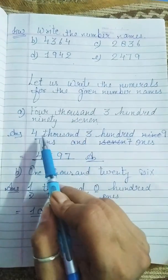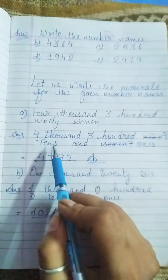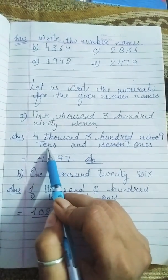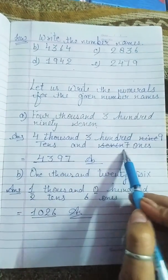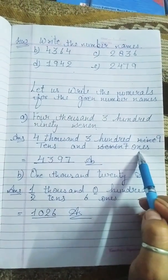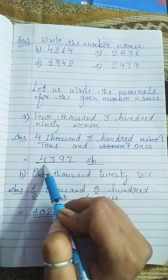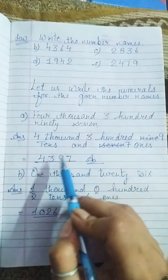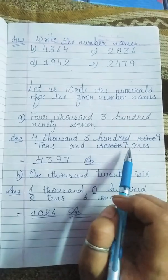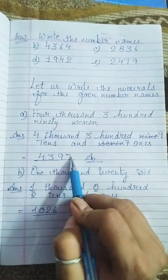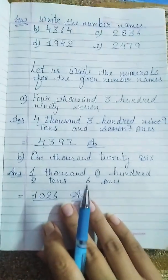Toh, kya padhenge? Four thousand, three hundred, nine tens, and seven ones. Toh, kya aagaya? Four thousand, three hundred, nine tens means ninety, and seven ones. Seven ones, kya aagaya? Four thousand, three hundred, ninety seven is our answer.